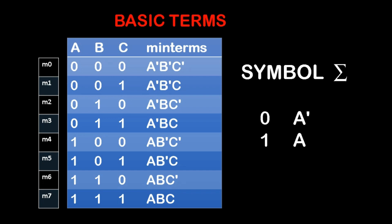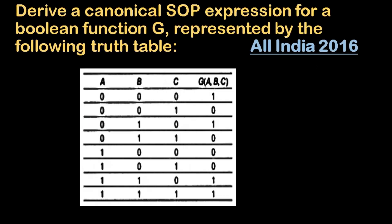Now these are the basic things; we will move on to the question. To derive a canonical sum of product expression for the Boolean function G represented by the following truth table — this is a 2016 board paper. The truth table with three input combination A, B, C is given along with the output G(A,B,C). The output values are also given in the table. Sometimes only the output values are given without the table, in which case you take the output in proper order as given in the question.